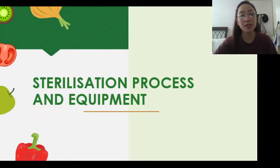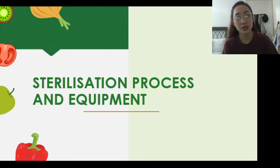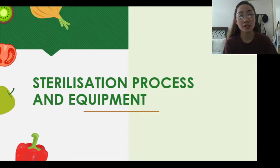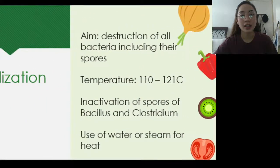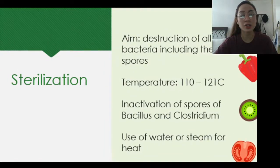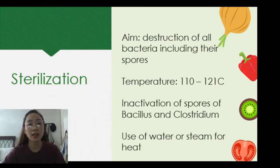Let's start first with the sterilization process and equipment. Since our last module, Part 1, we talked about blanching, pasteurization, and other thermal processes, which are still part of this — so this is just a continuation. Sterilization's aim is the destruction of all bacteria, including their spores.